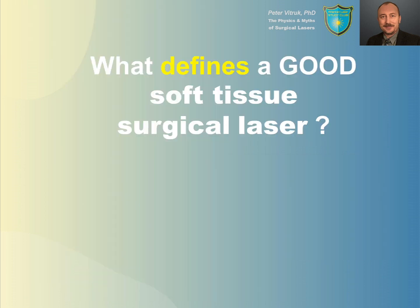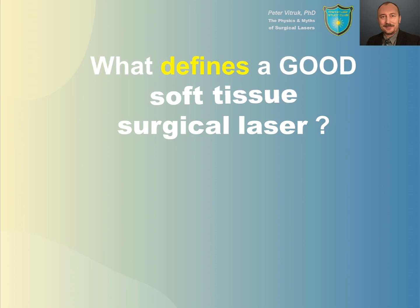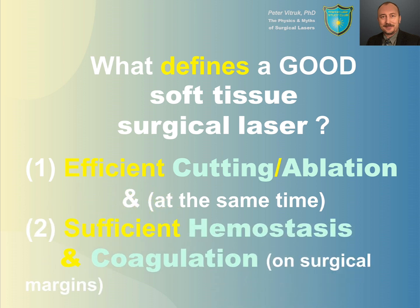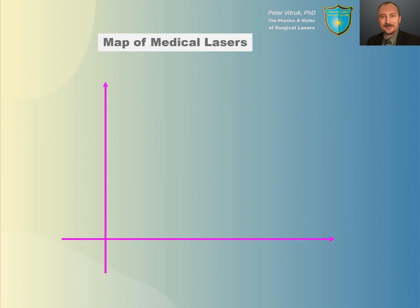What defines a good soft tissue surgical laser? The answer has two parts. First, the laser beam has to be able to cut, vaporize, or ablate the tissue. Second, the laser beam has to provide coagulation and hemostasis on the surgical margins. So the laser we want for soft tissue surgeries has to cut and coagulate.